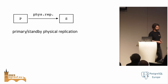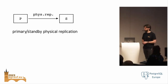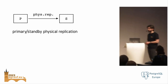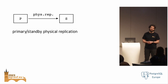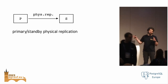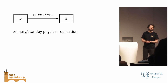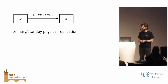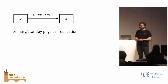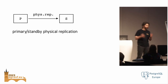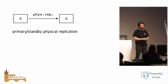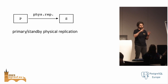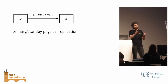This is the starting point — a classical physical replication setup. You have the primary, which is the one you actually use, and then you have a standby just in case the primary has a problem, fails, or you need to do some maintenance and then fail over to it.